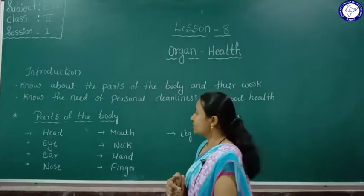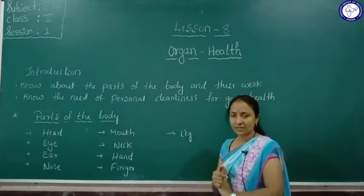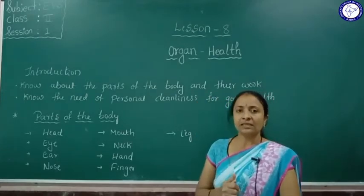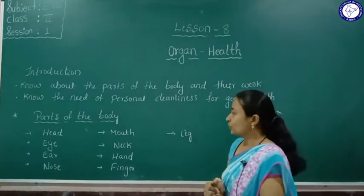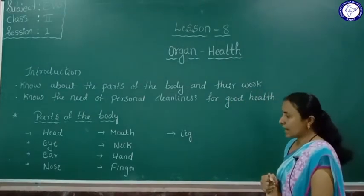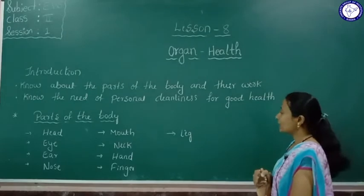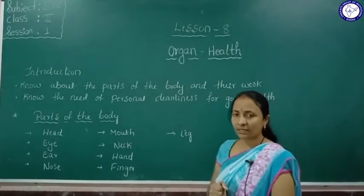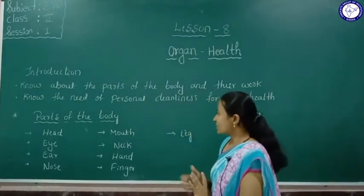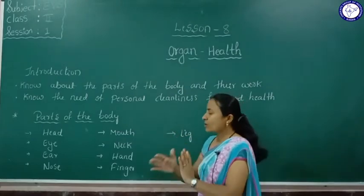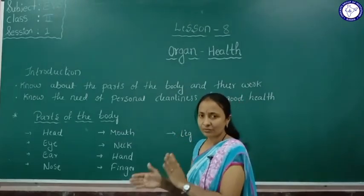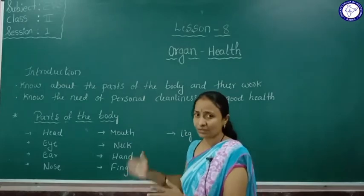In this lesson, starting from here — the parts of the body. Which are the parts of the body? Head, eye, ear, nose, mouth, neck, hand, finger, and leg. These all are the parts of the body. So how are they all working? What is the function of all these parts?